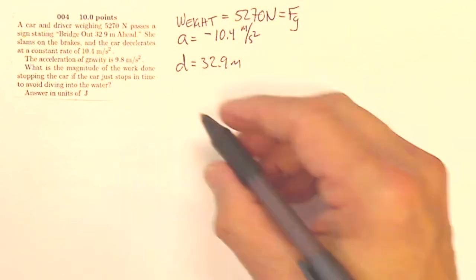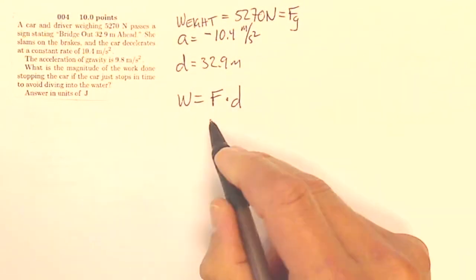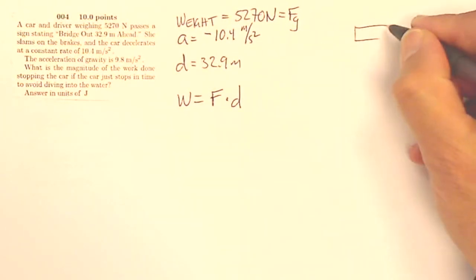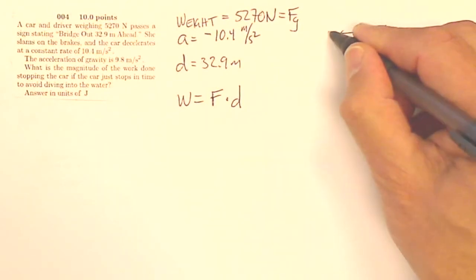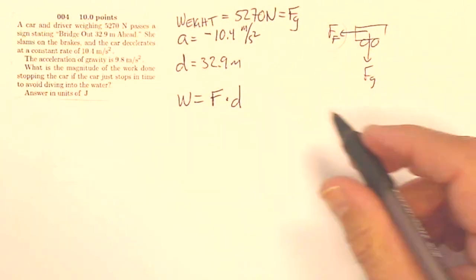But I do know my acceleration. So my work is my force times my distance. This isn't the force of gravity. This is the force acting on the car opposite. So here's my car. Gravity points this way. It's not going to do any work. Instead, it's going to be the force of friction on the tires stopping the car.